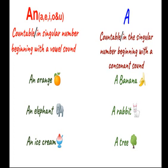We use a with countable nouns in the singular number beginning with a consonant sound. A, e, i, o, u are vowels; all the rest are consonants. So words that begin with consonant sounds take a before them. Like: a banana — B is a consonant, so we use a before banana. A rabbit — R is a consonant. A tree — T is a consonant. These are all countable nouns in singular number beginning with consonant sounds.